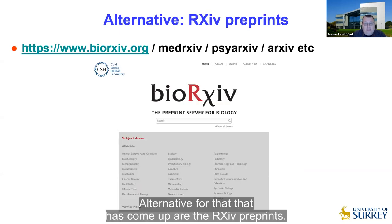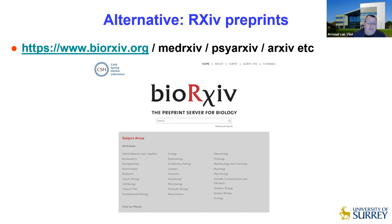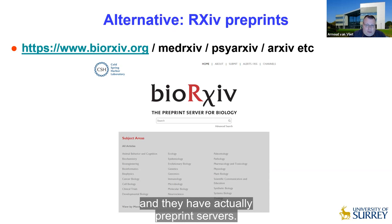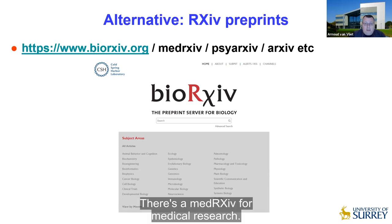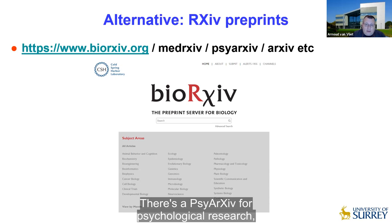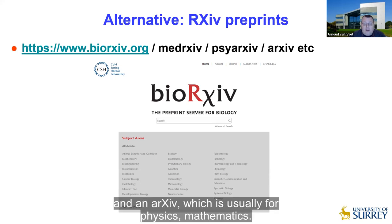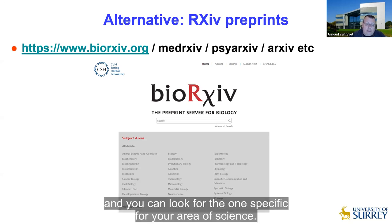An alternative that has come up are the archive preprints — spelled as R-X-I-V, pronounced 'archive' — and they are basically preprint servers. The one I have experience with is bioRxiv, which is the preprint server for biology. There's also medRxiv for medical research, PsyRxiv for psychological research, and arXiv which is usually for physics and mathematics. So there are multiple preprint servers and you can look for the one specific to your area of science.